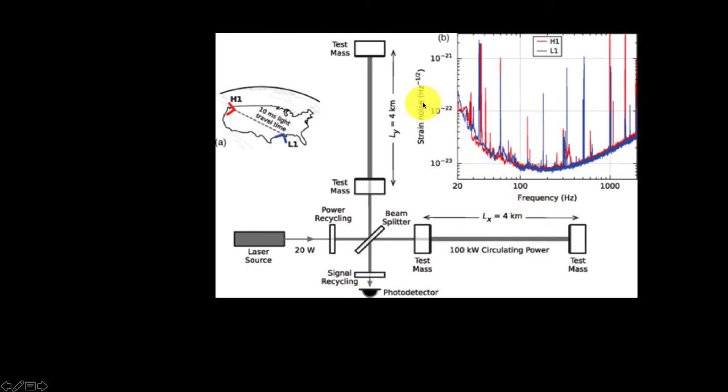This diagram shows the strain noise, which is how sensitive you are. Strain is the percentage change, so it's one part in 10 to the minus 23. You can see it's not so sensitive at frequencies of 20 hertz. It gets more sensitive—peak sensitivity is around 200 hertz—and then the sensitivity decreases at higher frequencies.